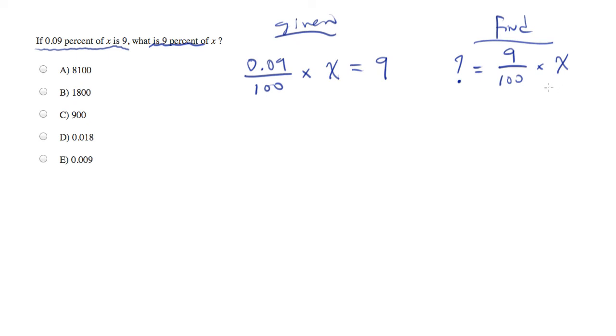So what is 9% of X? Now let's go ahead and solve for X. We're going to multiply both sides by 100 and we'll end up with 0.09X equals 900. Let's divide both sides by 0.09.